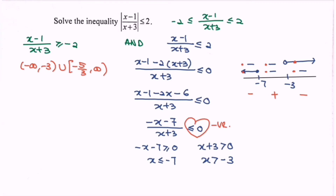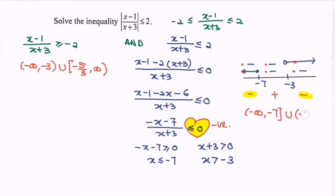We refer to the negative sign situation. Our answer will be negative infinity until negative 7, union from negative 3 until infinity, where negative 3 is not included. That is the answer for the right hand side.